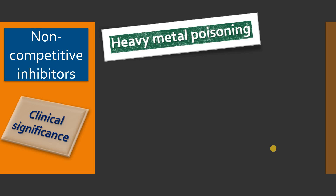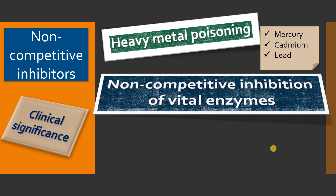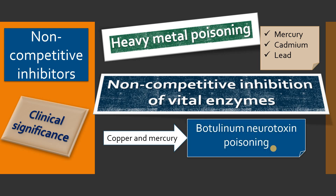In heavy metal poisoning — such as mercury, cadmium, and lead — these metals non-competitively inhibit enzymes by binding to sulfhydryl groups. They act as non-competitive inhibitors of vital enzymes in the body, leading to lead poisoning and mercury poisoning. Recent research has demonstrated that copper and mercury can be used in cases of botulinum neurotoxin poisoning. Studies in rodents showed that copper and mercury can non-competitively inhibit the light chain protease, potentially treating botulinum neurotoxin poisoning.